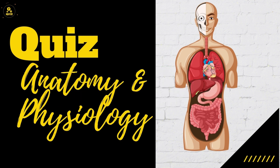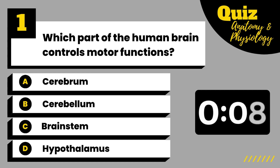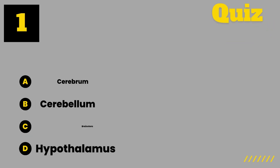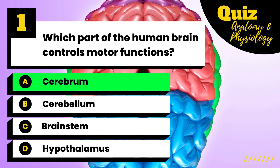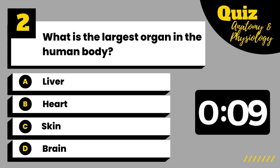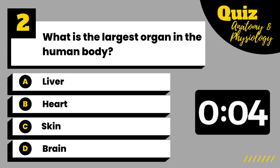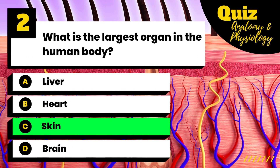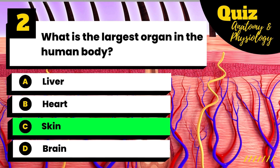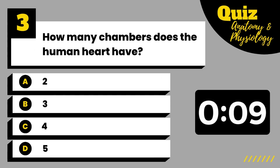Let's get started. Which part of the human brain controls motor functions? What is the largest organ in the human body? How many chambers does the human heart have?